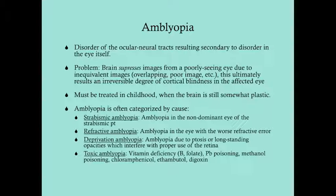Once you pass a certain age, as you get older, your brain is not going to be able to make those connections from the eye to the visual cortex. So amblyopia is the condition where you're not making the connection from the eye to the visual cortex because of some problem in the eye. This is a neurologic disorder, generally secondary to a disorder of the eye.